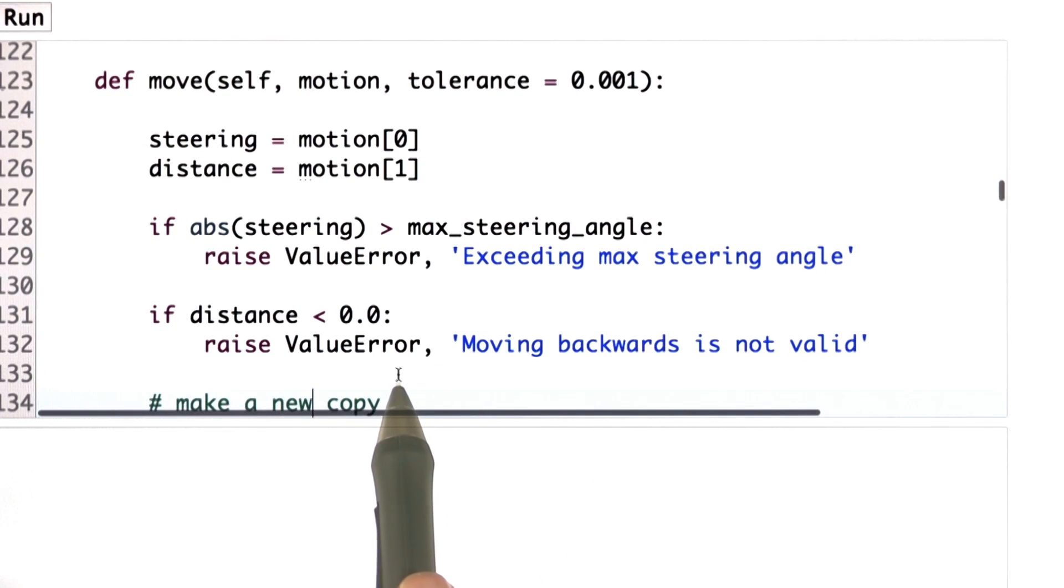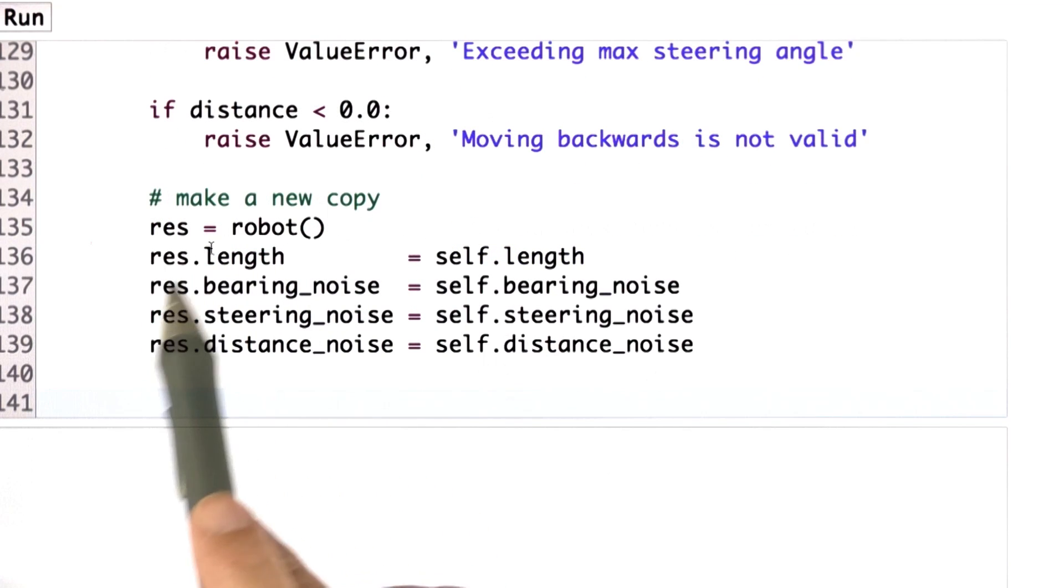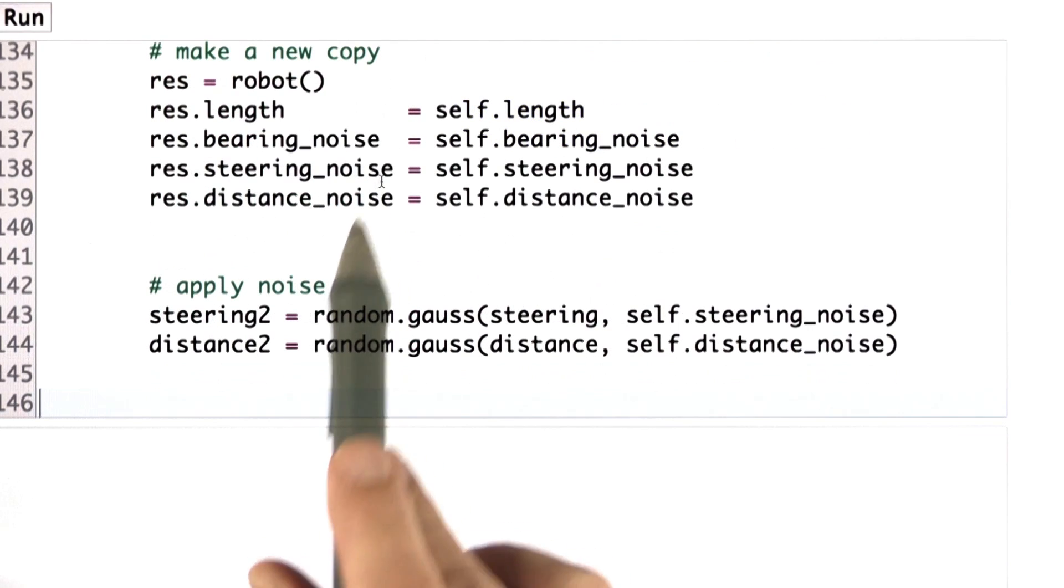And as I go down, I now implement the motion model. So let's just look a little bit more. I make a new robot copy as in my sample code in class. I copy all the generic parameters: length, bearing noise, steering noise, and distance noise. Nothing surprising here.